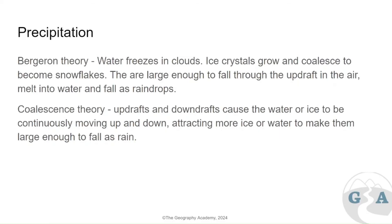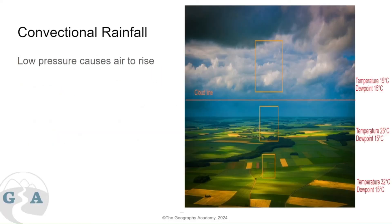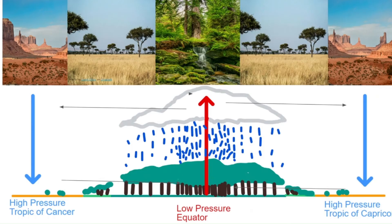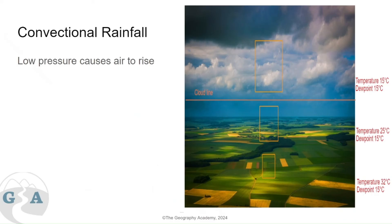The coalescence theory also looks at updrafts and downdrafts — ice can continuously move up and down within a cloud for a long period of time, causing coalescence and making droplets large enough to fall as rain. Convectional rainfall is associated with low pressure areas, where a high amount of heat energy causes less-dense air to rise. This is linked to the low-pressure equatorial area, such as the ITCZ, where the air rises until the temperature matches the dew point and condensation occurs.